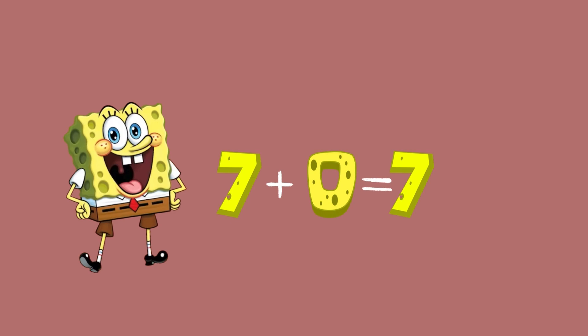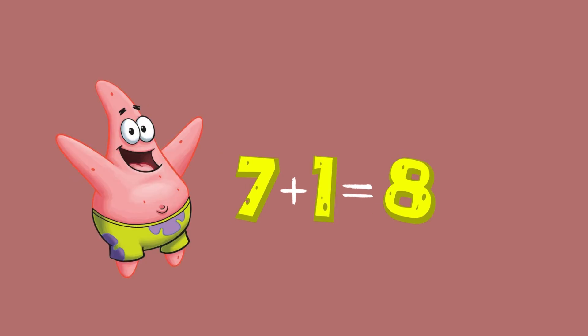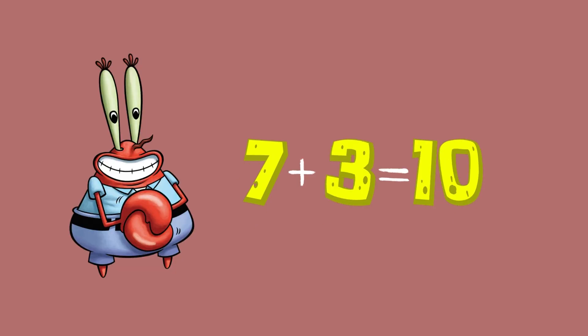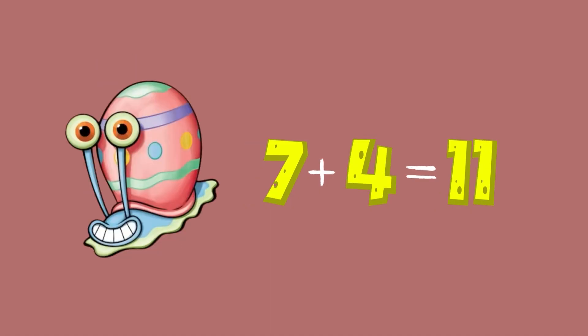Seven plus one equals eight. Seven plus two equals nine. Seven plus three equals ten. Seven plus four equals eleven.